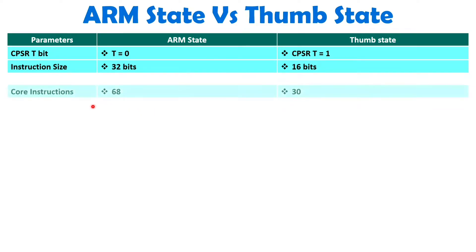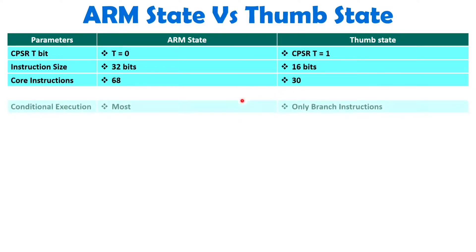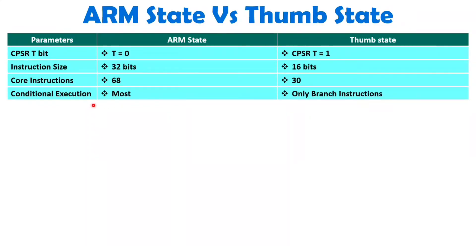You will observe that 68 core instructions are available with ARM state, while in Thumb state you will have only 30 instructions. In ARM state, most instructions support conditional execution, whereas in Thumb state, only branch instructions can support conditional execution.